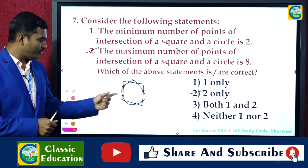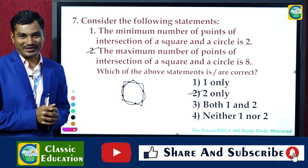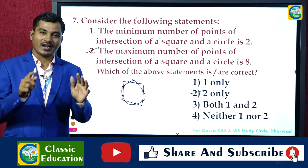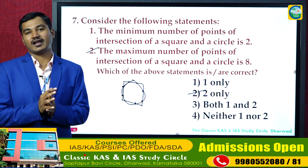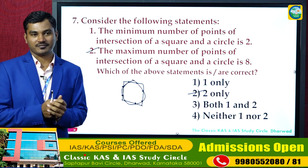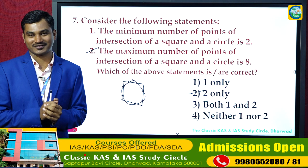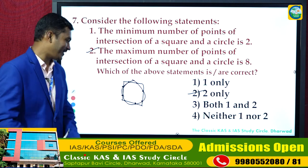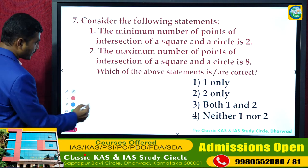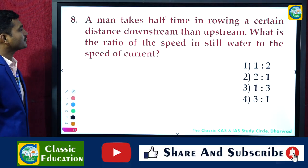Only statement 2 is correct, so the answer is option 2 only. If you feel a square and circle can intersect at more than 8 points, please tell me in the comment box.